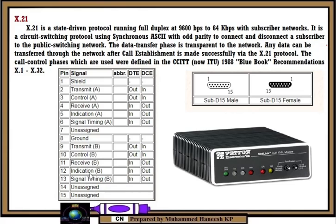Pin 12 is indication B signal — DTE in and DCE out. Pin 13 is signal timing B — DTE in and DCE out. Pin 14 is unassigned. Pin 15 is also unassigned.